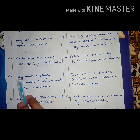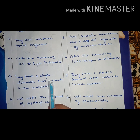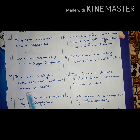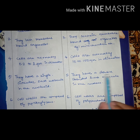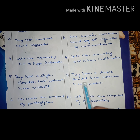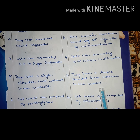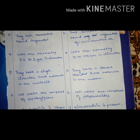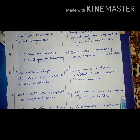Prokaryotes have a single circular DNA molecule in the nucleoid, whereas eukaryotes have double-stranded DNA molecules in the nucleus. The cell walls of prokaryotes are composed of peptidoglycans, whereas the cell walls of eukaryotes are composed of polysaccharides.